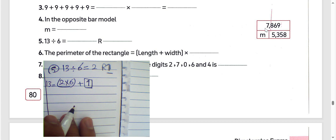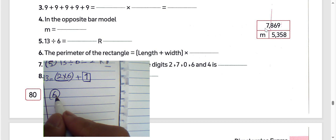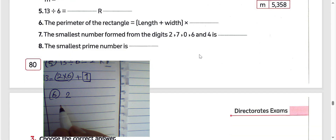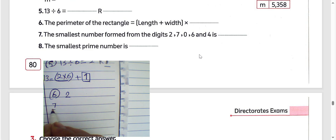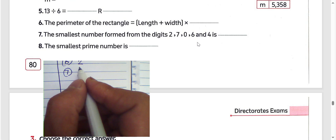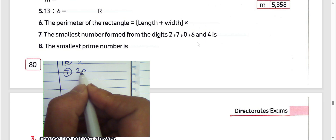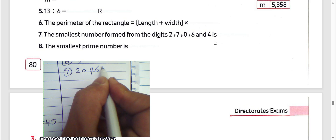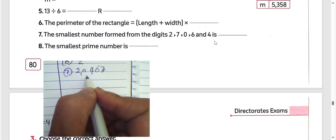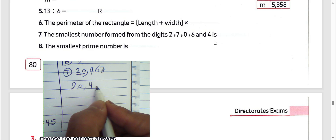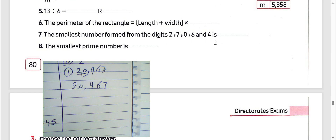Again, 15 equals 2 times 6 plus 1 — 2 times 6 is 12, 12 plus 1 equals 13. Question number 6: the perimeter of a rectangle equals length plus width times 2. Write 2 in the space. Question number 7: to form the smallest number from digits 2, 7, 0, 6, 4 — write the smallest digits first from the left: 0, 2, 4, 6, 7.